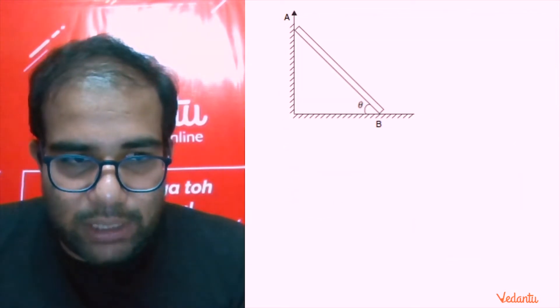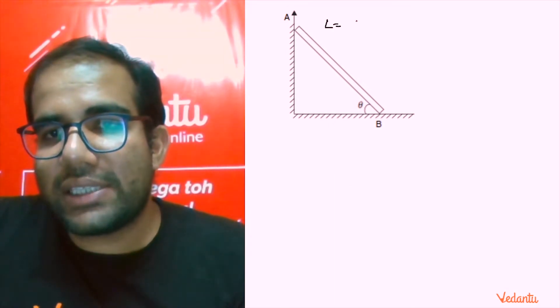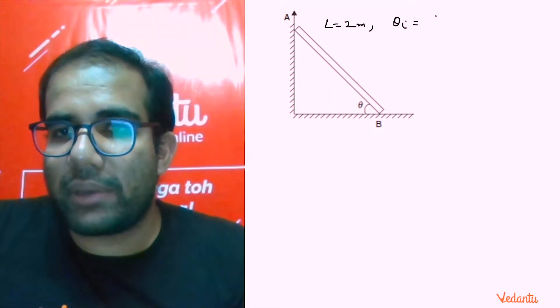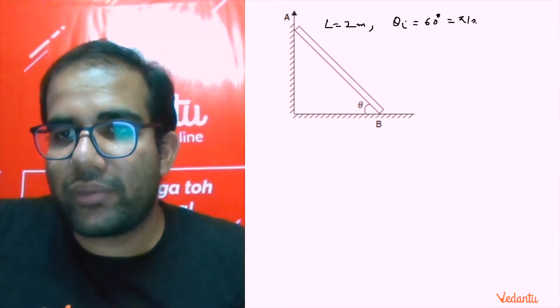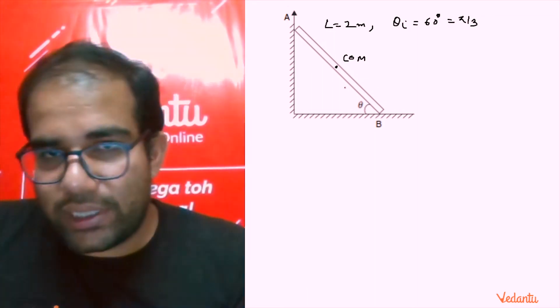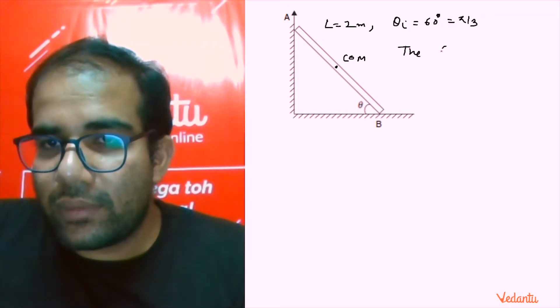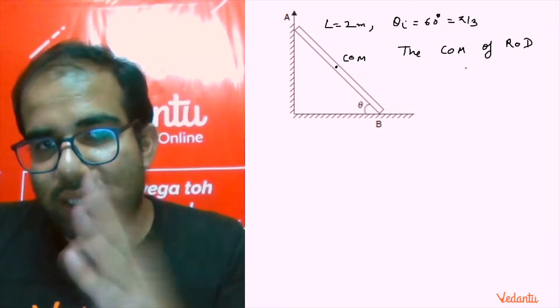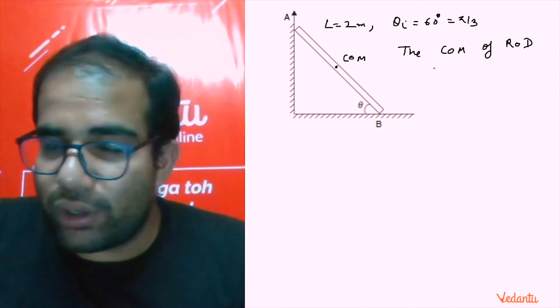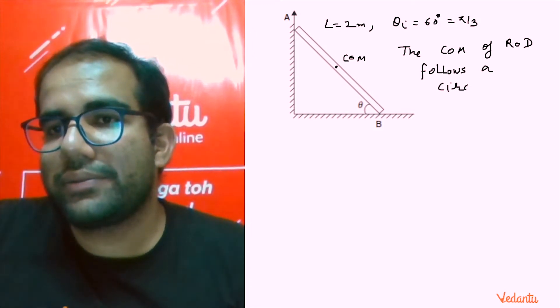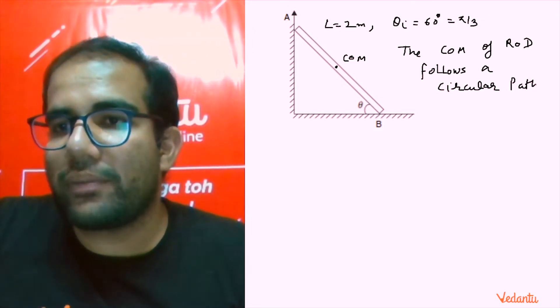Now let me discuss the problem. This length is 2 meter and initial theta was 60 degree, that was pi by 3. In these situations the theta is variable.